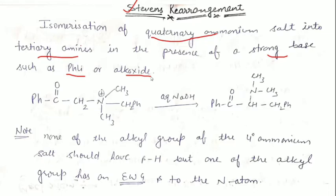Stevens rearrangement kya hai? Stevens rearrangement ek aisi rearrangement hai jis mein quaternary ammonium salt convert hota hai tertiary amine mein, aur presence honi chahiye strong base ki. Strong base aapka phenyl lithium bhi ho sakta hai, alkoxide ion bhi ho sakta hai.